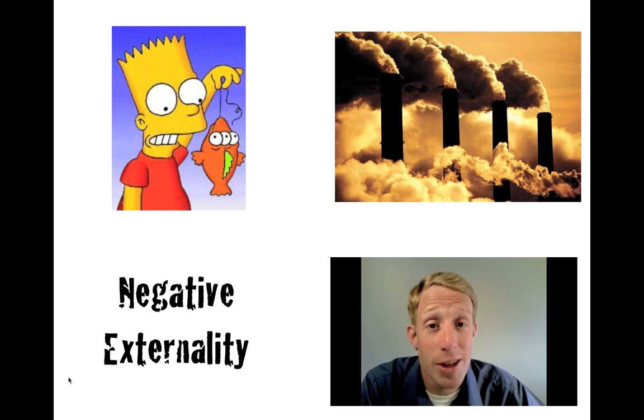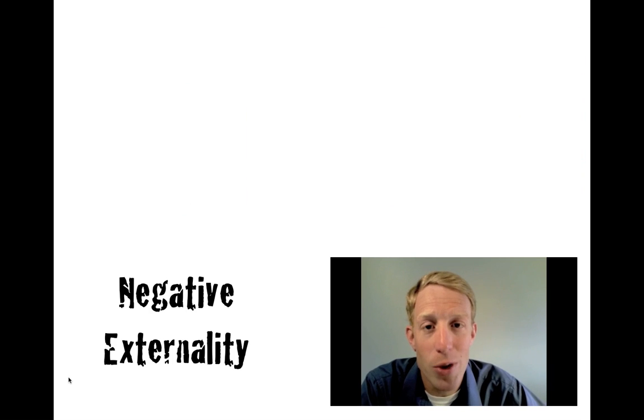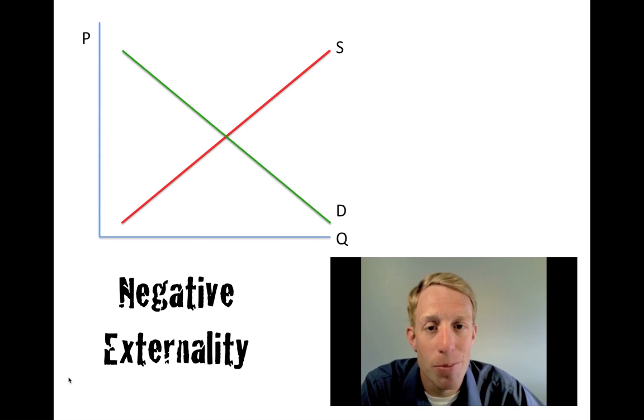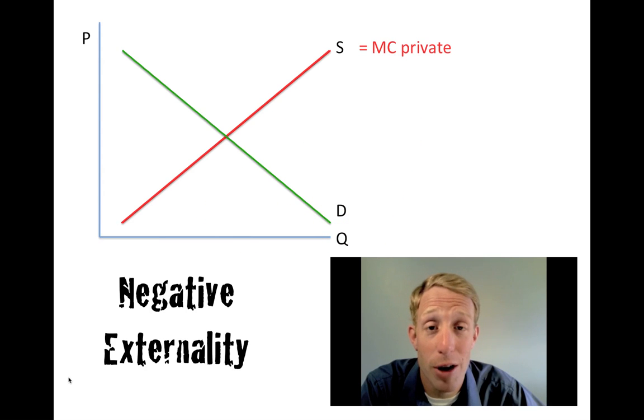From society's perspective, we have a divergence of interests. Here we see, in a graph, the normal demand and supply. Supply represents the marginal cost of production, where demand represents the marginal benefit of production.